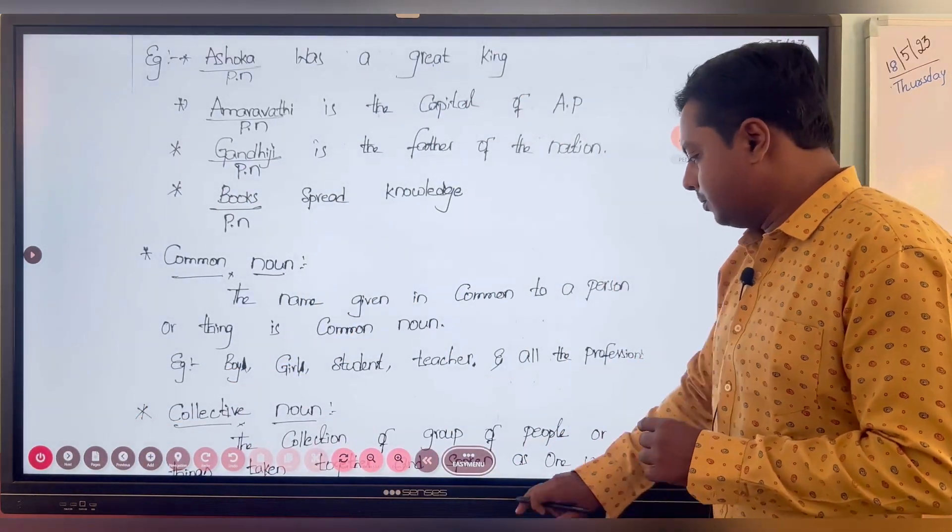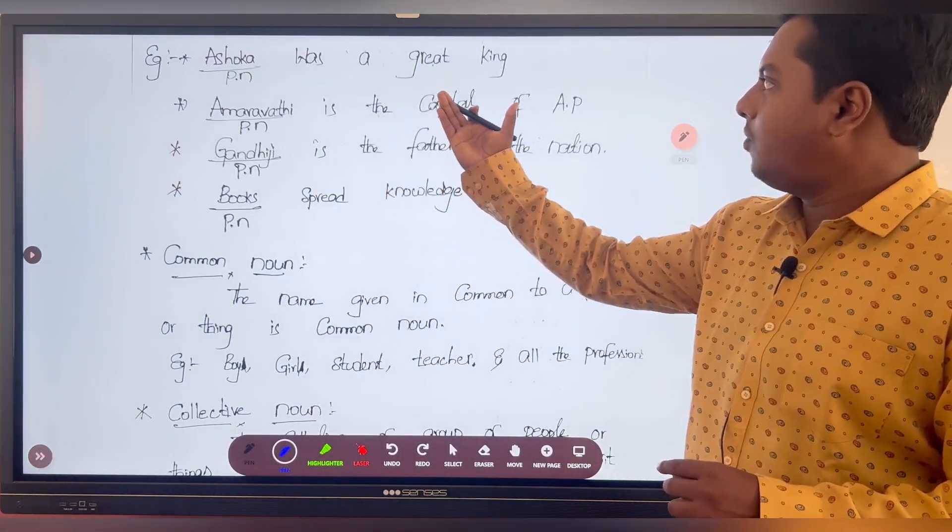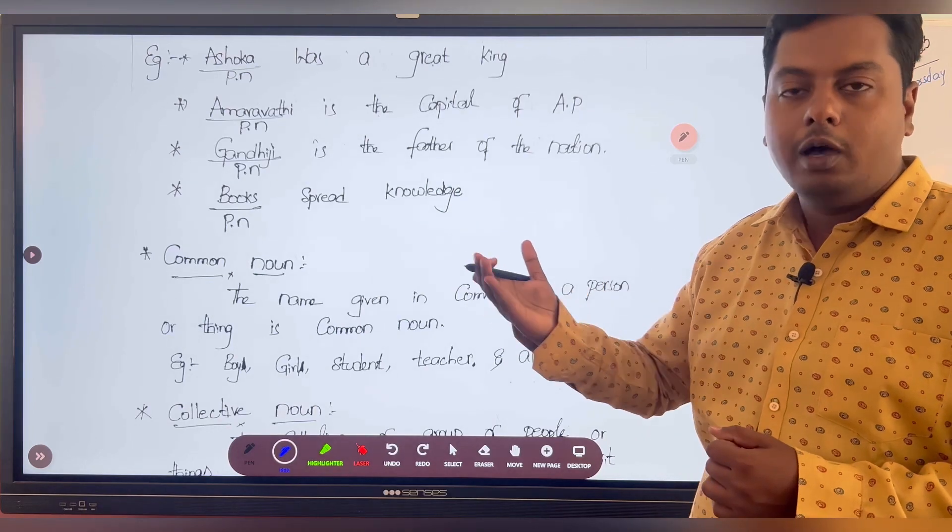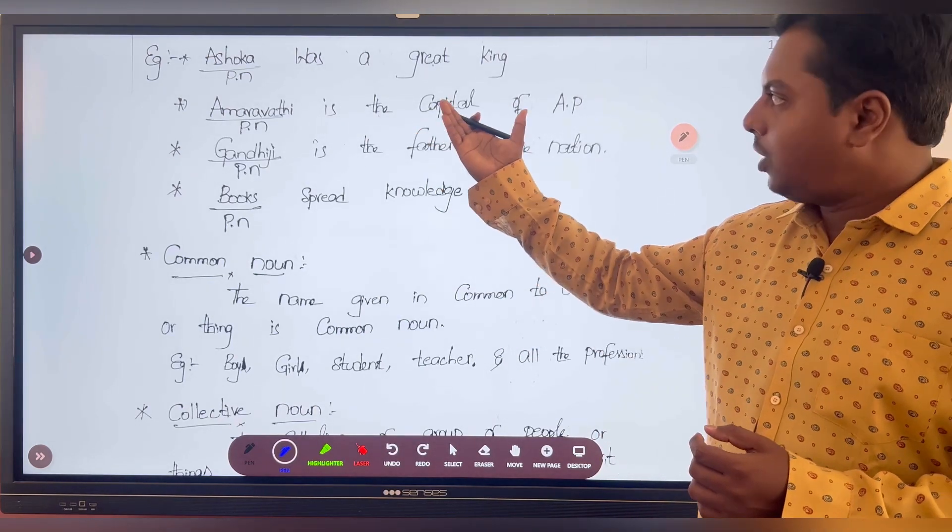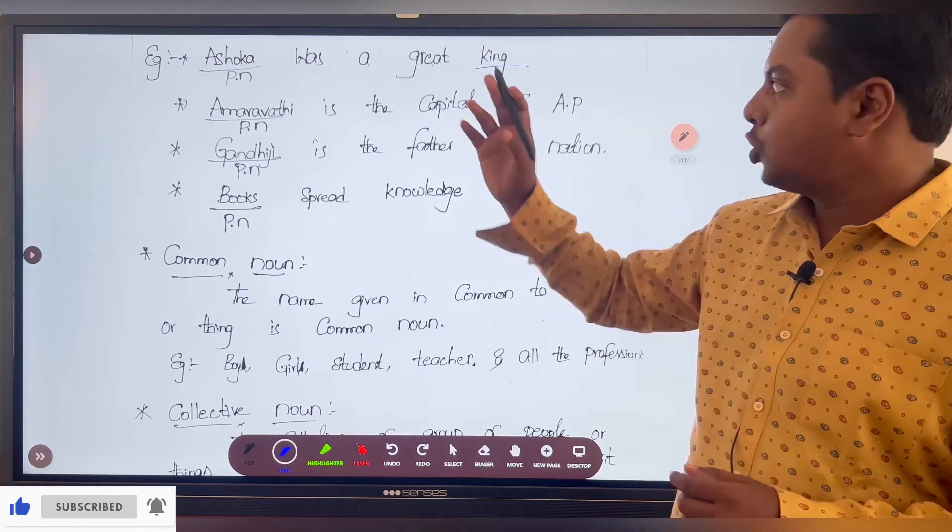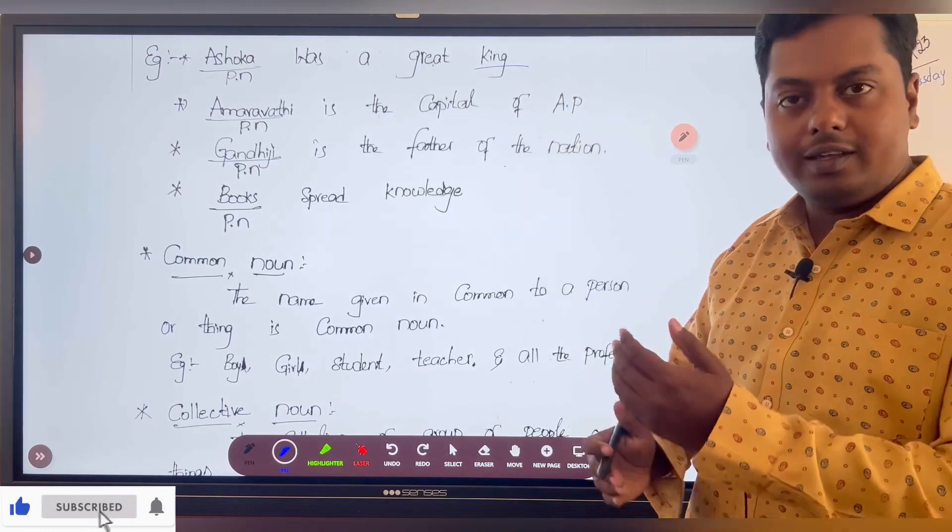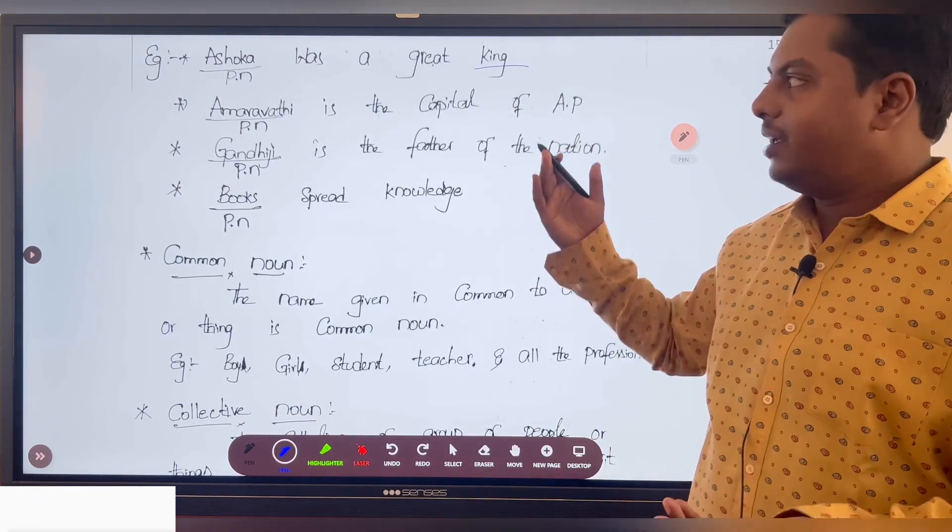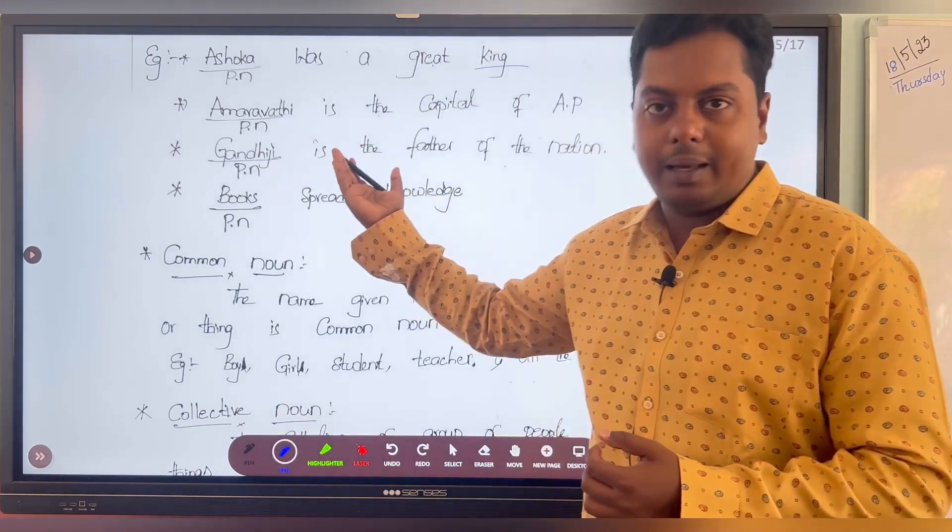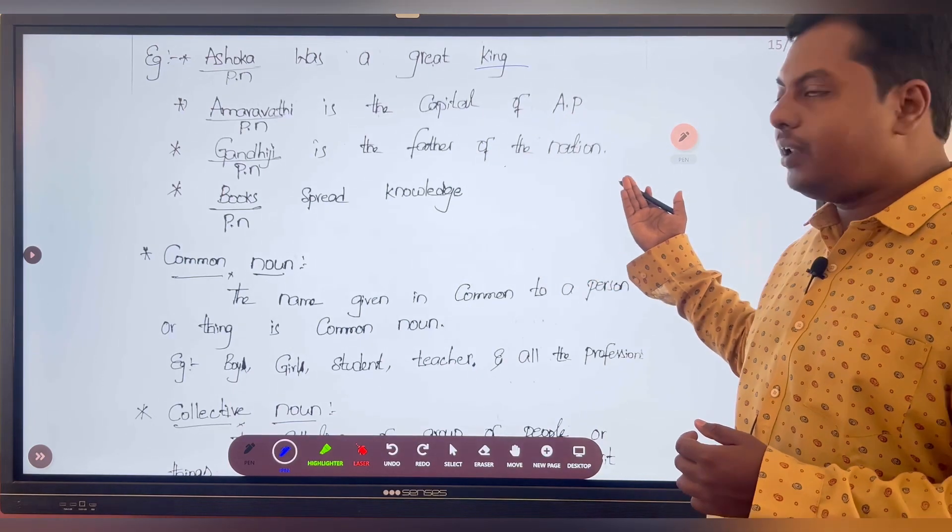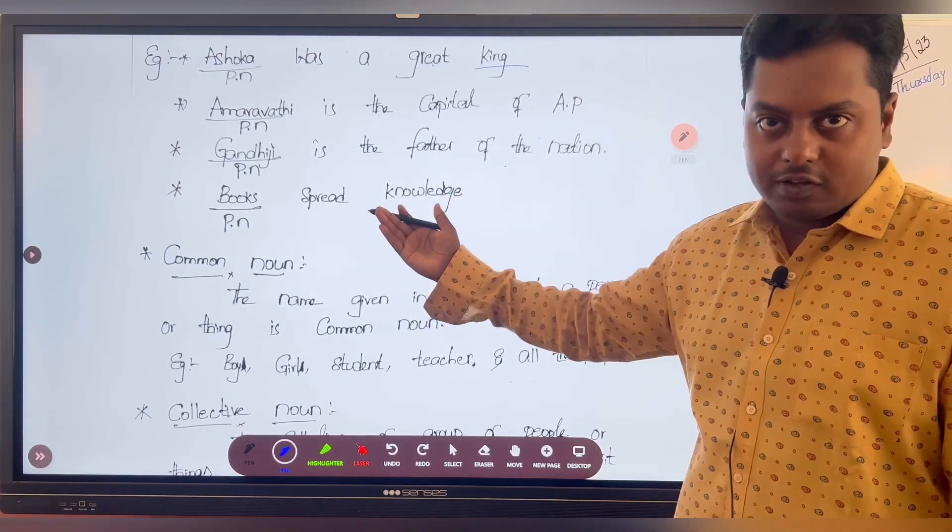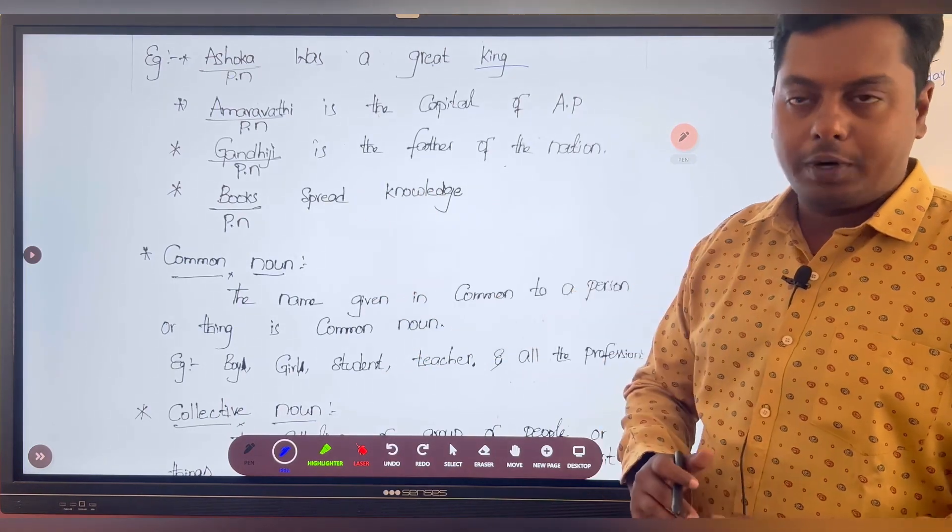Examples of proper noun. Ashoka was a great king. Identify proper noun here: Ashoka. Ashoka is a proper noun because it is the name of a person. Of course, king is also noun here, but we are talking about proper noun. Ashoka is a proper noun. Next, Amaravati is a capital of Andhra Pradesh. Here proper noun is Amaravati—it is the name of a place. Gandhiji is the father of the nation. Here, proper noun is Gandhiji—it is the name of a person. Books spread knowledge. Books is a thing, so it comes under proper noun.